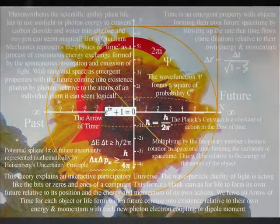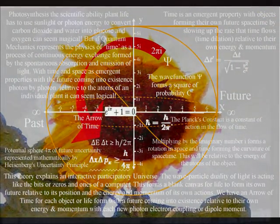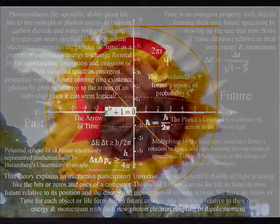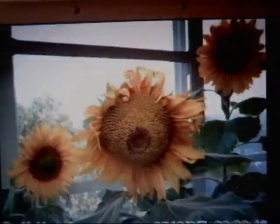Another example is photosynthesis, the scientific ability plant life has to use sunlight or photon energy to convert carbon dioxide and water into glucose and oxygen. Basically the entire trick of photosynthesis is to form a concentration gradient between positive and negative charge with the future unfolding relative to the plant with the movement of that charge.